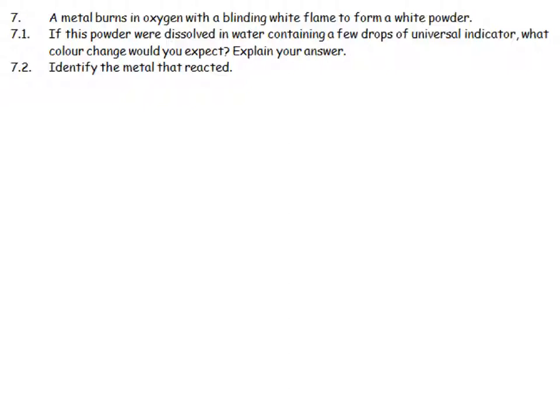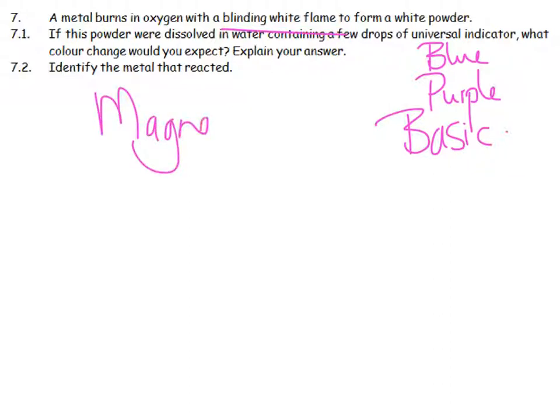The metal burns in oxygen with a blinding white flame to form a white powder. If this powder were dissolved in water containing a few drops of universal indicator, what color change would you expect? You still haven't had to identify anything because any metal oxide is always going to give you a basic solution and universal indicator is going to be blue or purple. Why? Because it is basic. Identify the metal that reacted. Well, the blinding white flame is absolutely typical of magnesium.